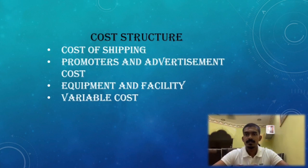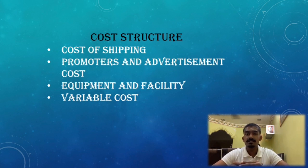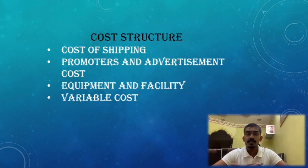The last element of the Business Model Canvas is cost structure. As you want to start a business, the company should at least spend almost RM1000 for equipment and facilities. The variable cost includes inventory, utilities, and maintenance.